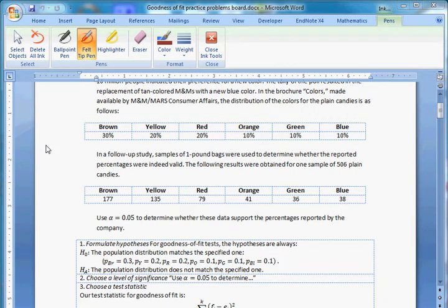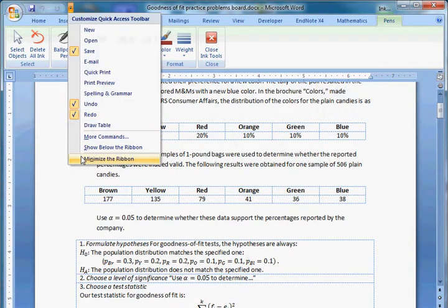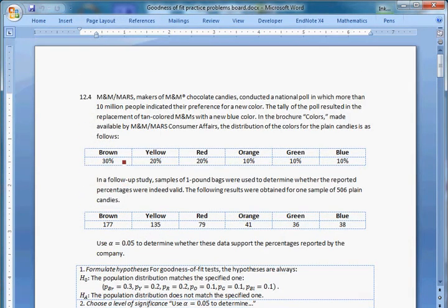Hey, we're working on goodness-of-fit problems, hypothesis testing problems, and right now we're going to work on one that's a multinomial populations problem. This is question four from your book, from chapter 12.